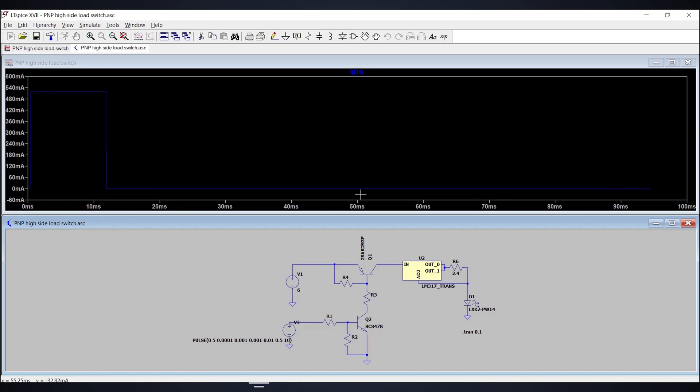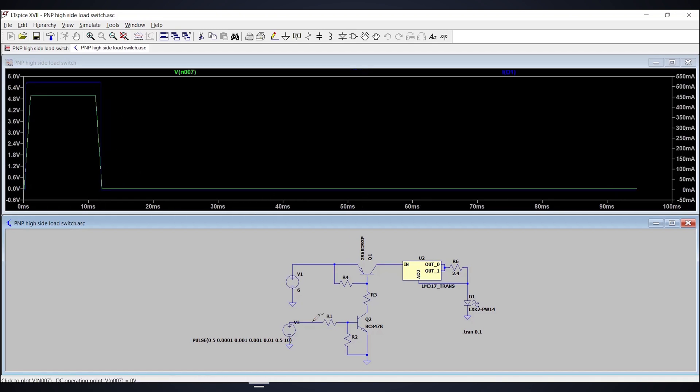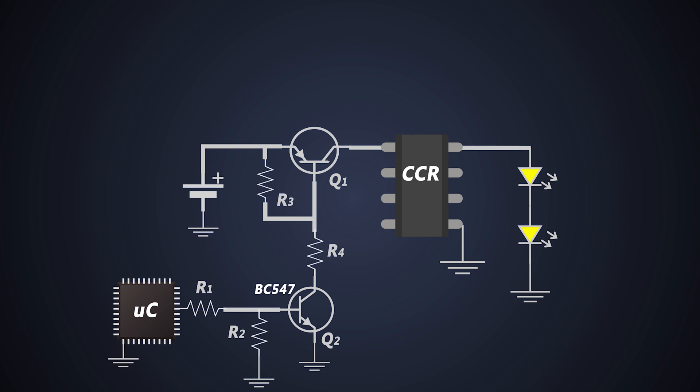That's how we can use a PNP transistor as a high-side switch in any DC application. We will see more such application of a BJT in coming videos. Till then, stay tuned.